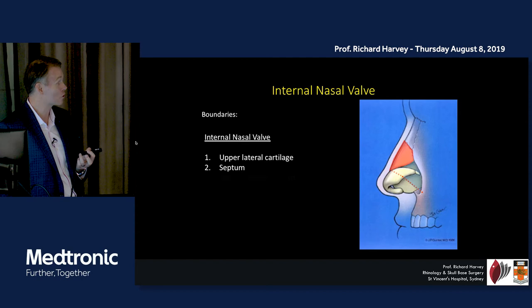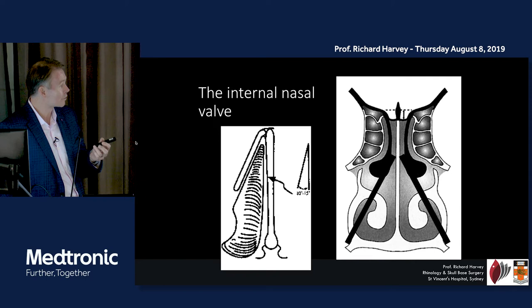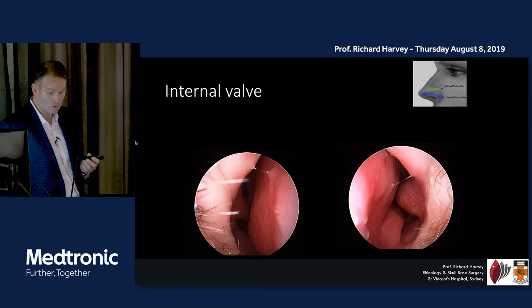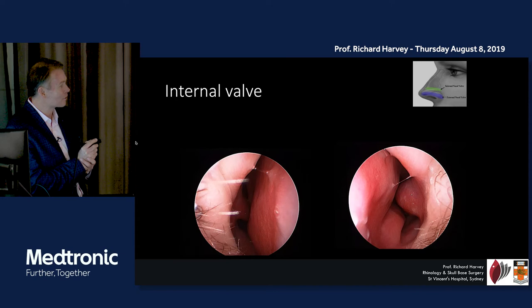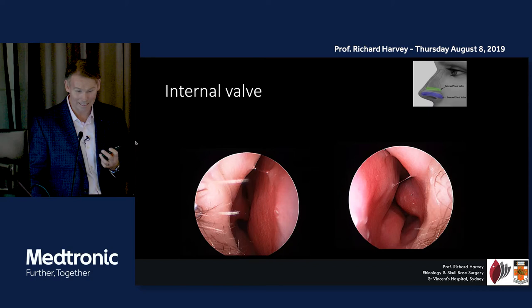The internal nasal valve — traditionally the narrowest point — is made up by the upper lateral cartilage, the septum, and the turbinate. Your breathing space in terms of the internal nasal valve is really made up by how big your turbinate is, the position of your septum, and the side wall of your nose — the upper lateral cartilage. This person has a very subtle septal deviation but is essentially near normal. You can see the edge of the cartilage there — it doesn't have any hairs on it, so it's hairless — and that's how you tell you're at the internal valve.